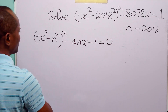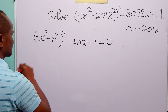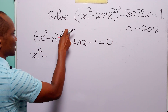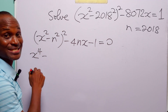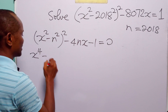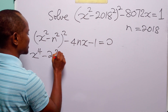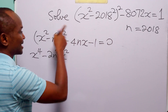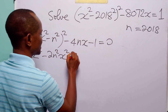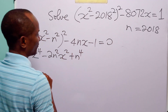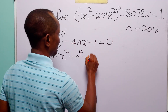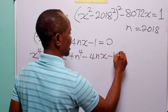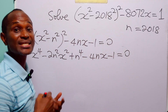Now we can expand. When we expand, we have x squared squared, that is x to the power 4, minus 2 times x squared times n squared, that is minus 2n²x², then minus n squared squared which is plus n to the power 4, then minus 4nx, and minus 1, all equal to zero.